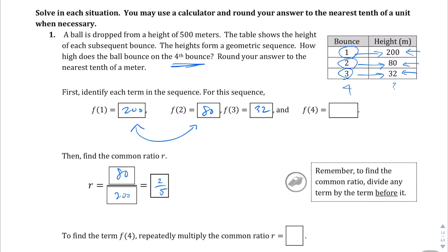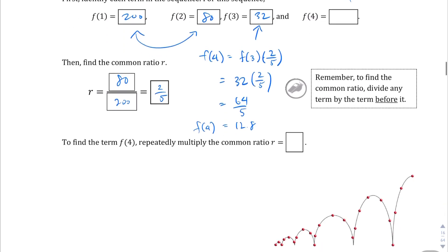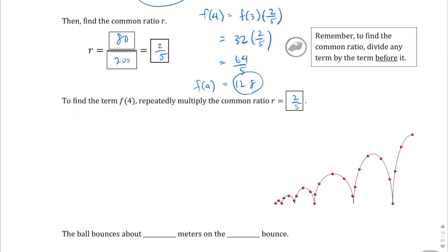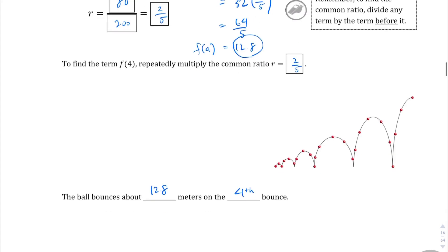And so, to find the fourth term, let me back that up a little bit. In order to find f of 4, we're going to take f of 3 times the common ratio, in this case, which is 2 over 5. f of 3 was 32, and we get that from right there, times 2 over 5. And if you multiply that out, you should get 64 over 5, which as a decimal comes out to 12.8. So the fourth term is going to be 12.8. They want the common ratio. The common ratio is 2 over 5. And then the ball bounces about 12.8 meters on the fourth bounce, is our answer.